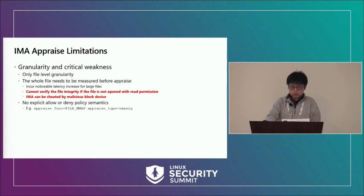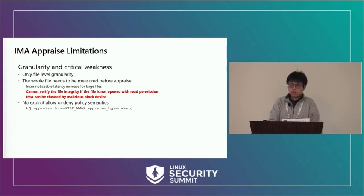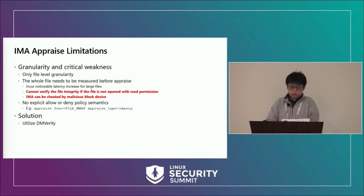Then there is the policy syntax issue. Essentially, the policy cannot make an allow or deny decision on its own. For example, an appraise rule applied to all files when executed by NMAP cannot — after policy evaluation — make an allow or deny decision by itself. IMA must ask other parts to compare the file hash against a pre-computed hash before deciding. This is a result of coupling between policy and mechanism. Our proposed solution is to utilize DM-verity and make IMA delegate the actual integrity mechanism to DM-verity, just as IPE does, instead of handling it on its own.